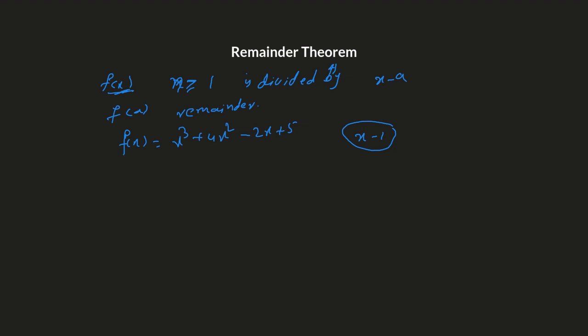By the remainder theorem, when a polynomial f of x is divided by x minus a, then f of a is the remainder. That means the function would be evaluated at point a. To find a, set x minus a equals 0, so x equals a. You just need to plug in this value of a into f of x to figure out f of a. In the same sense, this polynomial is divided by x minus a, so you need to figure out this constant number.